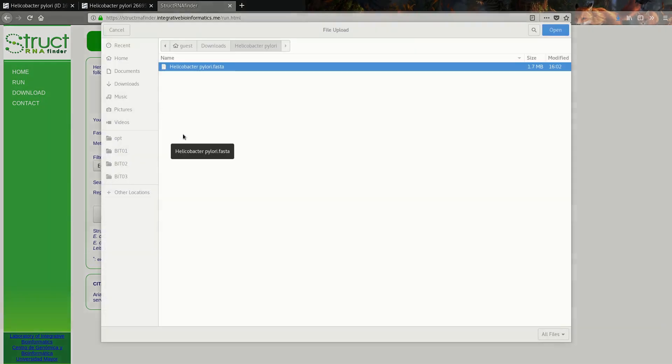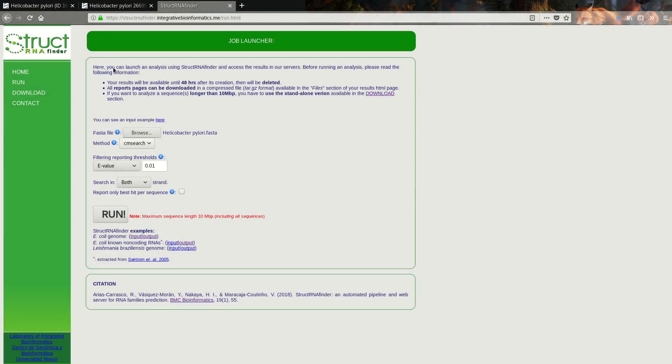Now you can see the file is loaded. You need to choose a method. The methods are not that important in our case, but the differences were made clear in the presentation. I will use CMSCAN for this one and leave the rest. Then just click run and it will start running.